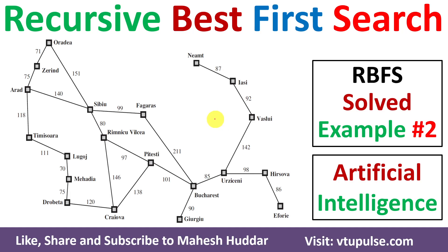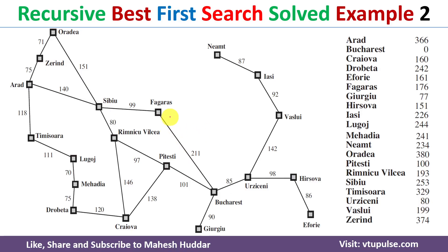Welcome back. In this video, I will discuss how to apply the Recursive Best First Search (RBFS) algorithm to find an optimal path from an initial node to a goal node. This is solved example number two; a link for other examples is given in the description below. I will be considering a graph where Arad is the initial node and Bucharest is the goal node. The true costs are given — for example, from Arad to Timisoara the true cost is 118. The heuristic values are given in a table; Arad's heuristic value of 366 means the estimated cost from Arad to Bucharest.